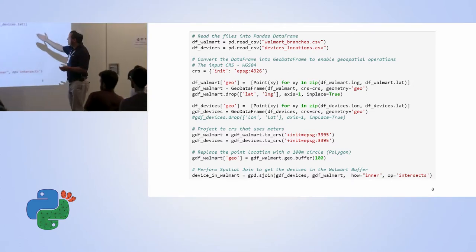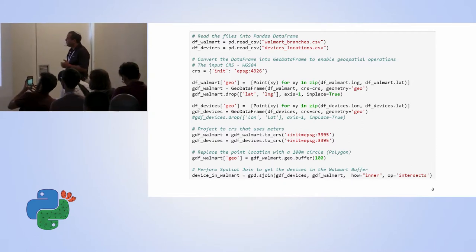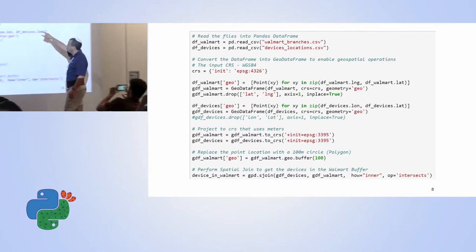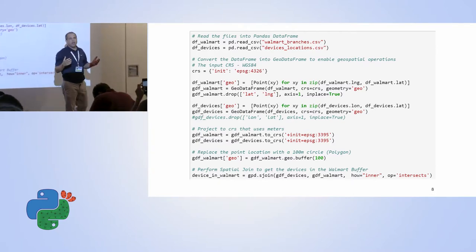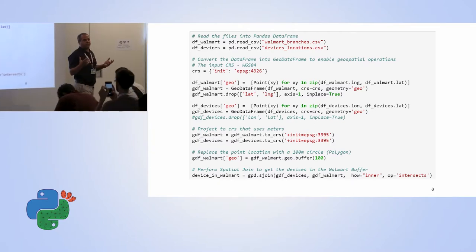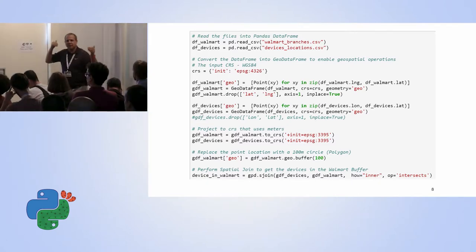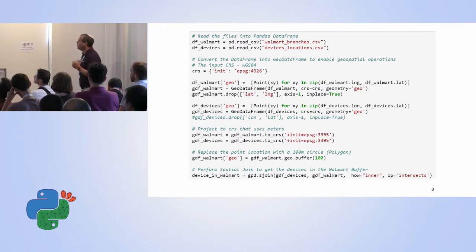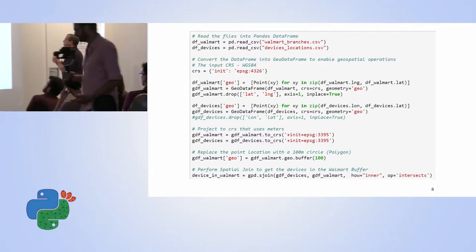We take the x/y columns and create a geometry column. With this geometry column we can have a GeoDataFrame. This is the first step: instead of having a data frame with only textual or numerical columns, we now have a geographical data frame.